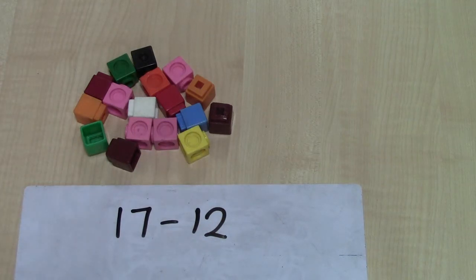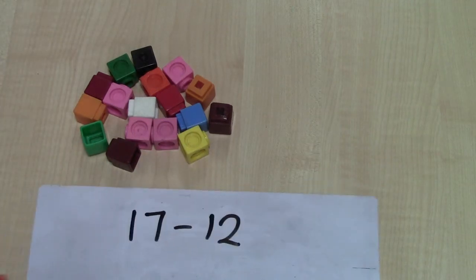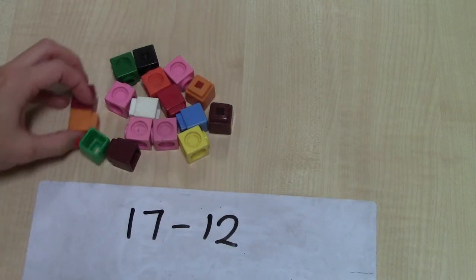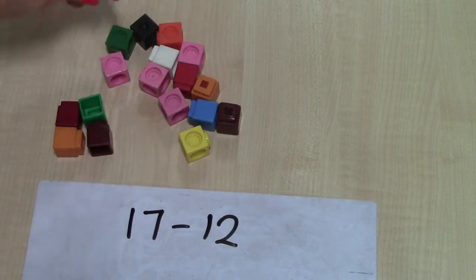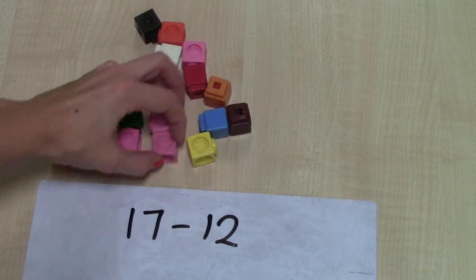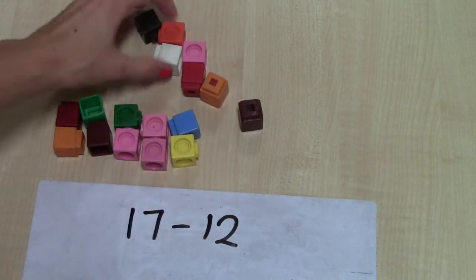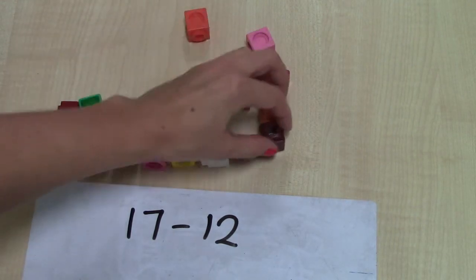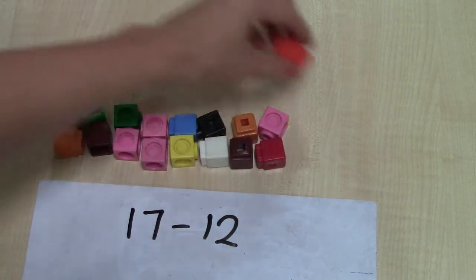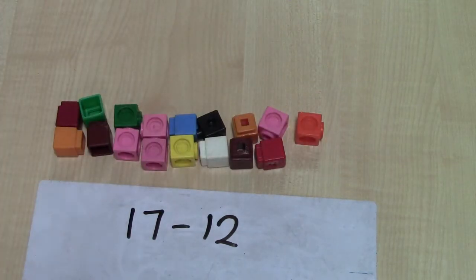Well I could arrange my seventeen cubes more clearly for me to see. I might use multiples of two, so two, four, six, eight, ten, twelve, fourteen, sixteen, and seventeen. And it makes it a bit easier to see.